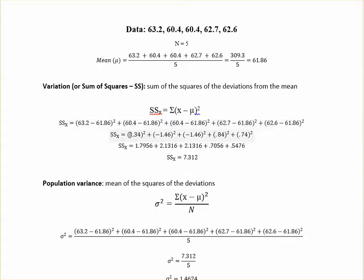So that's where you get the 1.34 squared. Then you've got your 60.4, which is from up here, minus your mean, 60.4, and so on, to get your 1.34, negative 1.46, negative 1.46, 0.84, and 0.74. So then you square each of those to get these numbers, and then you add them all up. That's the sum part right there to get your variation or sum of squares is your 7.312.